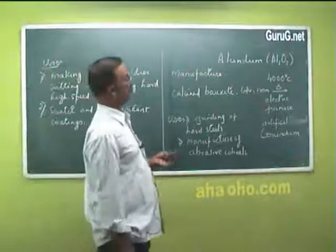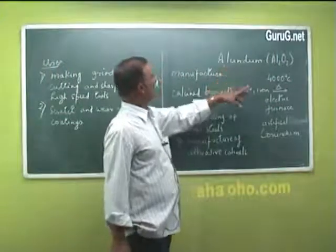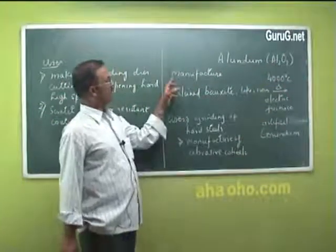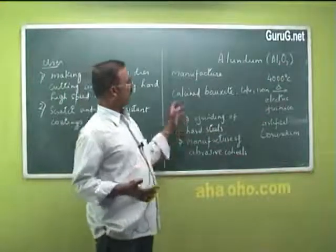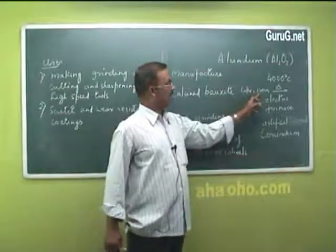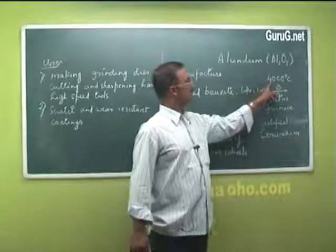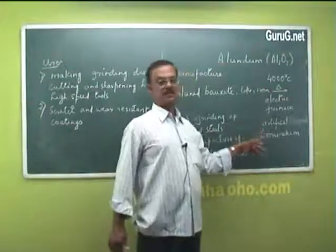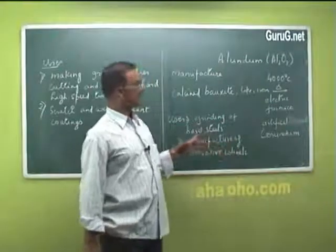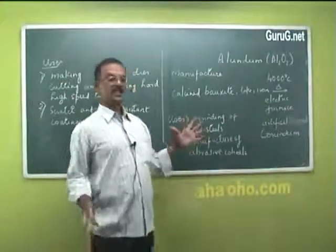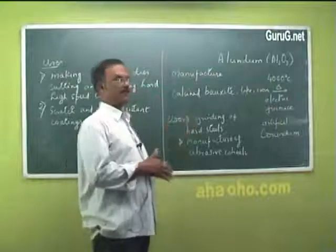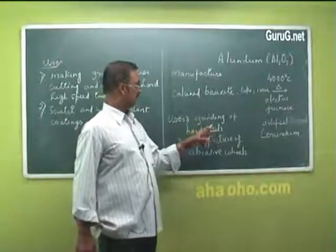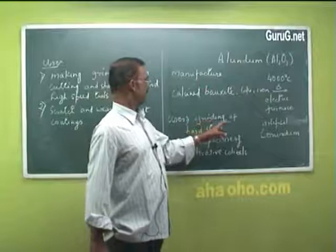The next abrasive is alundum, which also has the molecular formula Al2O3. It is manufactured by mixing calcined bauxite with coke and iron and heating in an electric furnace at 4000°C to produce corundum. This artificially prepared corundum has more or less the same properties as naturally occurring corundum, and it is mainly used for grinding hard steels.